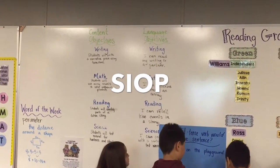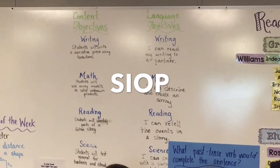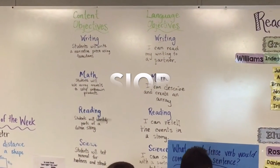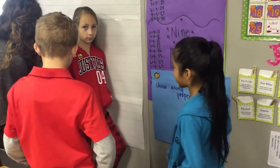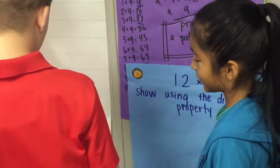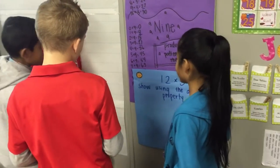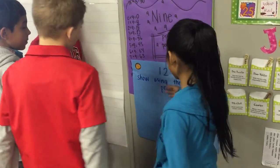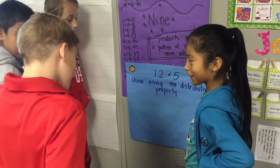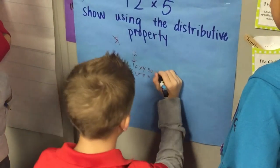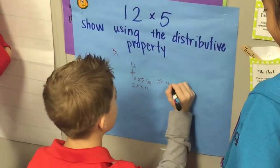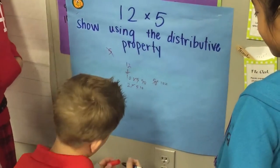SIOP is an effective collection of strategies that target English learners' needs in order to acquire academic knowledge as they develop English language proficiency. SIOP components include using strategies for new material and having students interact with one another. These two components are easily incorporated. Building background knowledge and emphasizing key vocabulary will help students meet their language objectives. Giving time for practice and application of new knowledge is critical not only for English language learners, but for all learners.